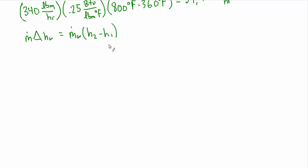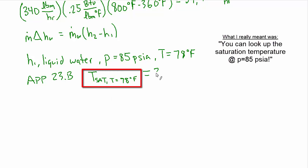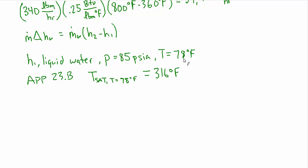So let's take H1 first. H1 is the liquid water that's being sprayed into the air. And we know the pressure is 85 PSIA in the chamber. And we know the temperature of that water is 78 degrees Fahrenheit. Now we have every reason to believe that this is liquid water, but I'm just going to confirm it. So if you check app 23 B, which is the steam table, you can look up the saturation temperature at 78 degrees Fahrenheit.